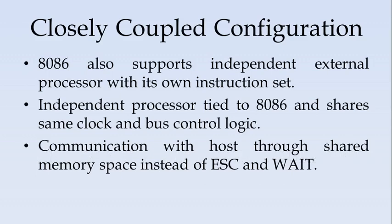Next we will see the closely coupled configuration. The closely coupled configuration is also one of the modes for multiprocessor configuration of 8086. Here it supports an independent external processor which has its own instruction set independent of 8086. That independent processor is tied to 8086 and shares the same clock and bus control logic — it is called closely coupled because of this sharing. Instead of escape and wait as in the coprocessor, communication between the host 8086 and the independent processor is through shared memory space.